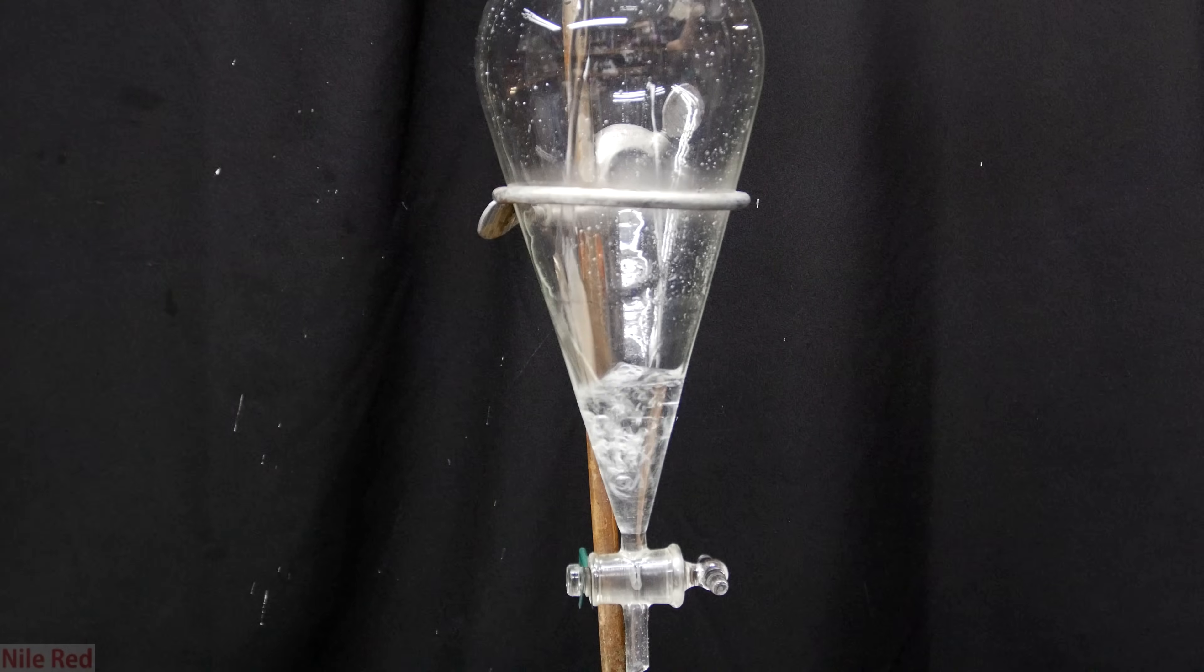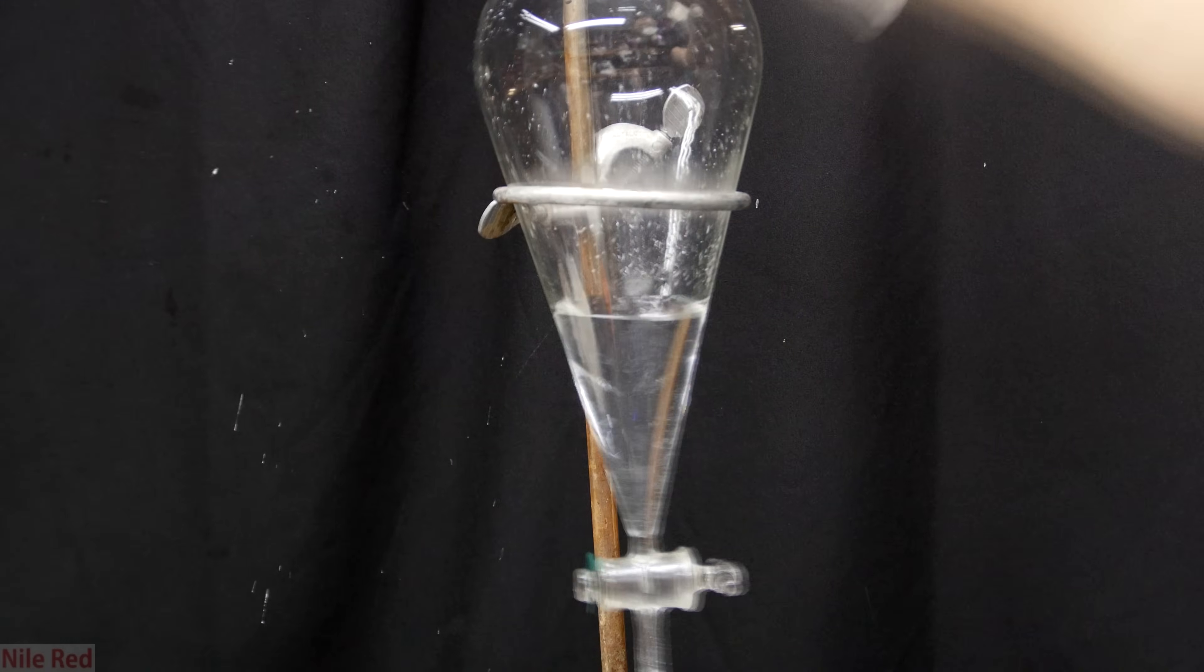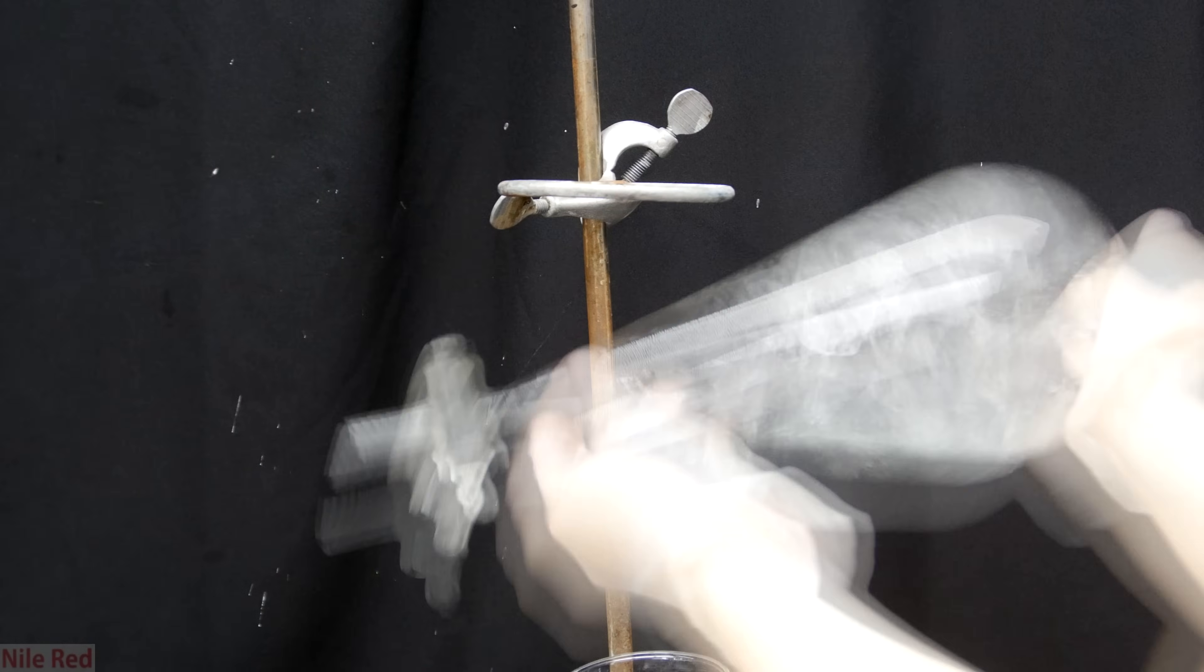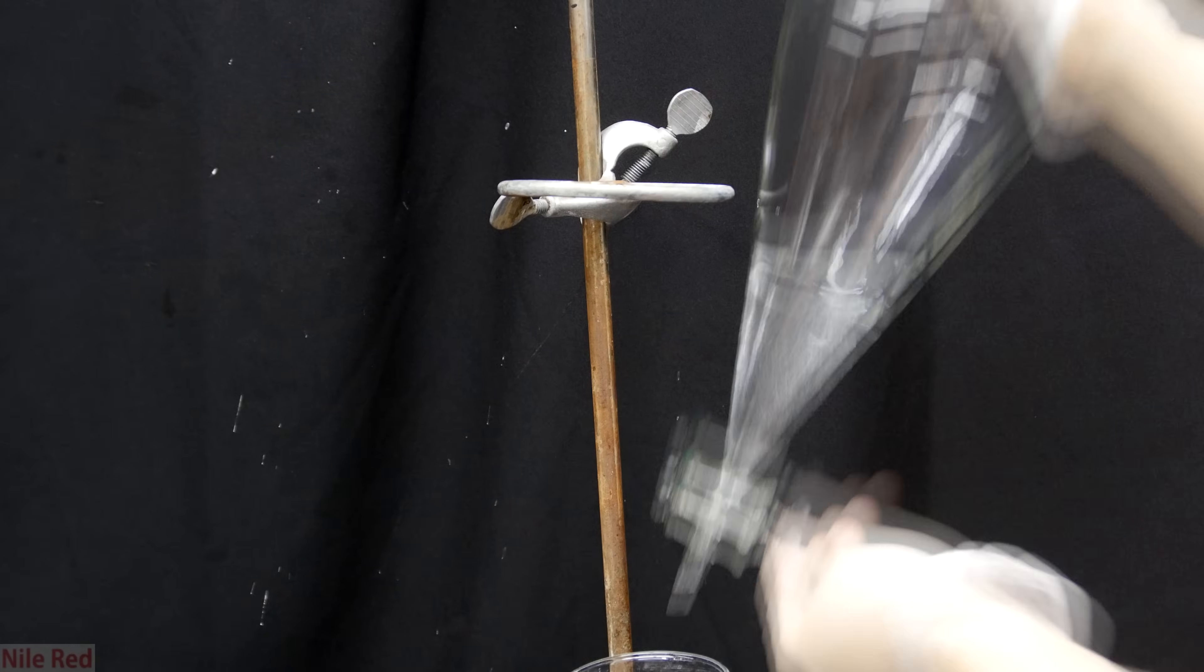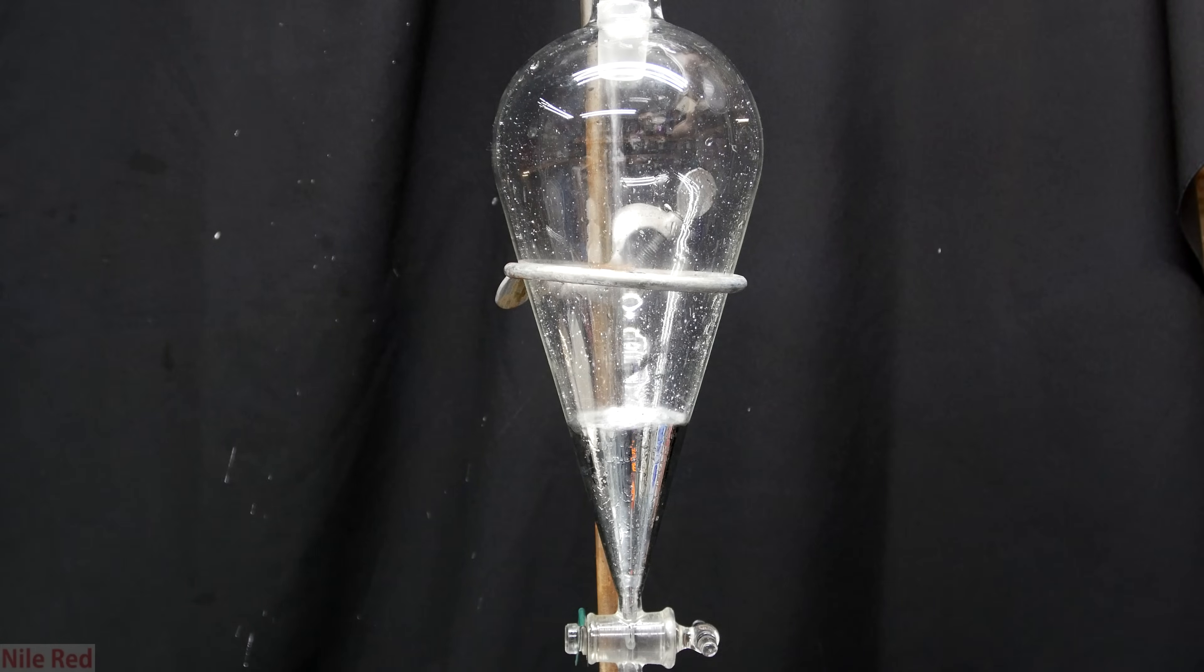Before re-adding the mercury back to the separatory funnel, it's washed out with a little bit of water. So the separatory funnel is capped and shaken and then the water waste is collected in the same beaker. Now that the separatory funnel is cleaner, we can re-add the mercury.